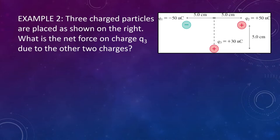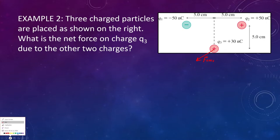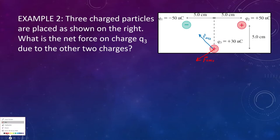Let's try to visualize what's going to happen. Q2 is also positive, meaning it's going to repel charge Q3. Likes repel, so we're going to see a force pushing Q3 down and to the left — let's call this F2 on 3. However, the other charge Q1 is negative, so that's going to attract our positive charge up and to the left — this is F1 on 3. So we have a charge being pulled up and to the left and down and to the left.